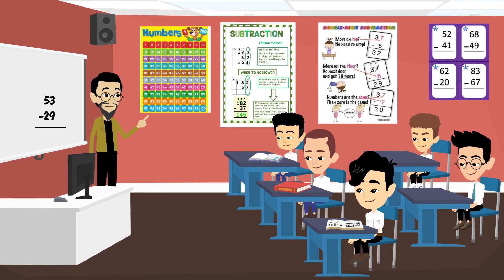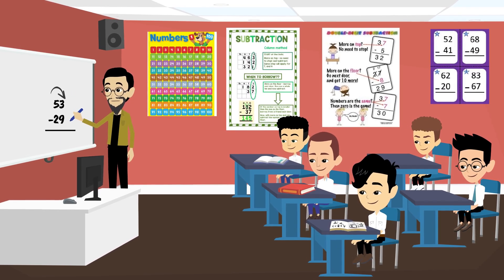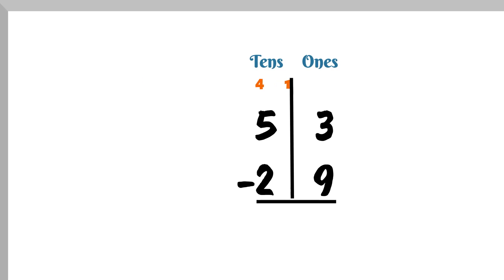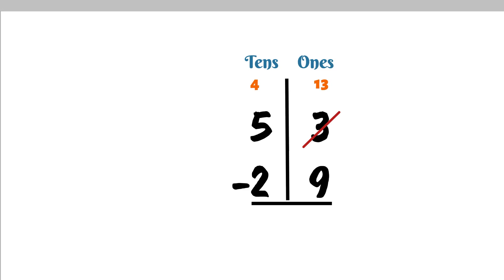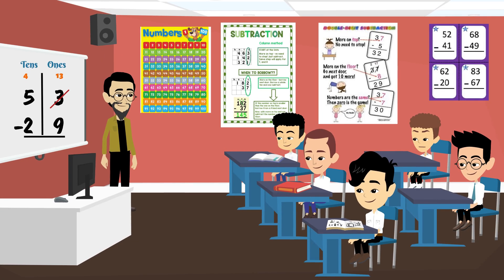So, we need to regroup. Let's look at the 5 in the 10's place. We'll borrow one 10 from the 5, which makes it a 4. And we'll add that 10 to the 3 in the one's place. So, what does that make? It makes it 13. Right.